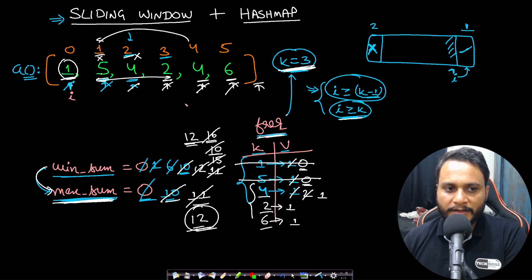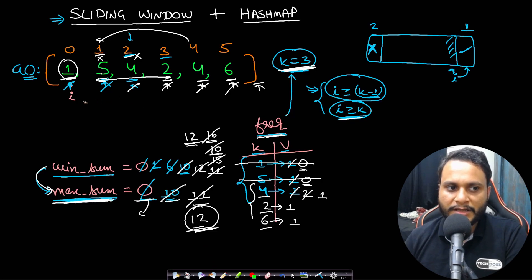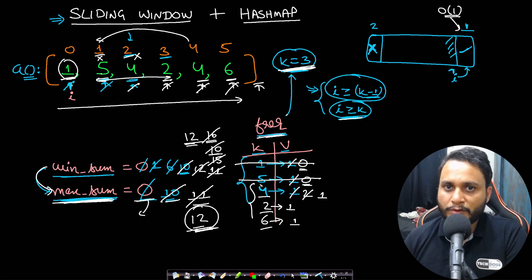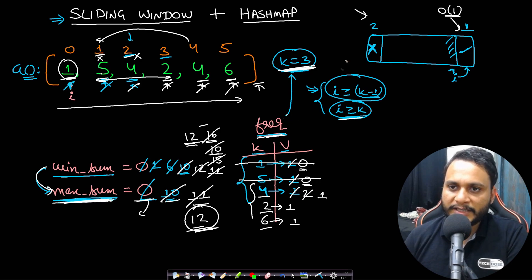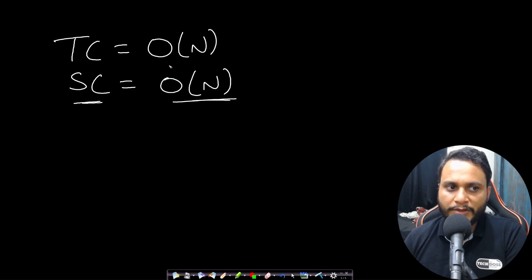This technique handles all edge cases: if none of the subarrays are valid, max sum remains zero, which is what we need to return. The time complexity is O(n) because we iterate all elements once, and insertion, frequency updates, and removal using an unordered hash map are all O(1). Updating max sum is also O(1). So the total is O(n) time and O(n) space for the frequency hash map.